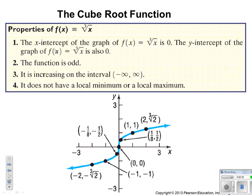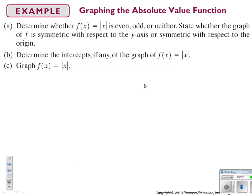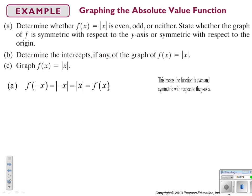The properties of the cubed root function: x-intercept is 0, y-intercept is 0, the function is odd, and it is increasing on everything from negative infinity to positive infinity. It has no local max or min. Next, for absolute value — we determine if it's odd or even and find its symmetry. We plug in negative x: the absolute value of a negative number equals the absolute value of the positive number, so f(−x) = f(x), which means the function is even and has symmetry with respect to the y-axis.